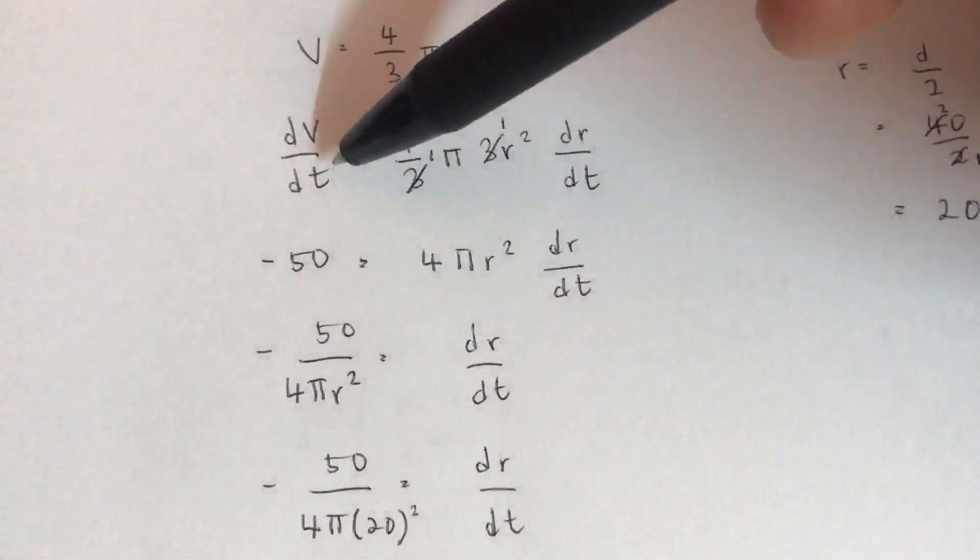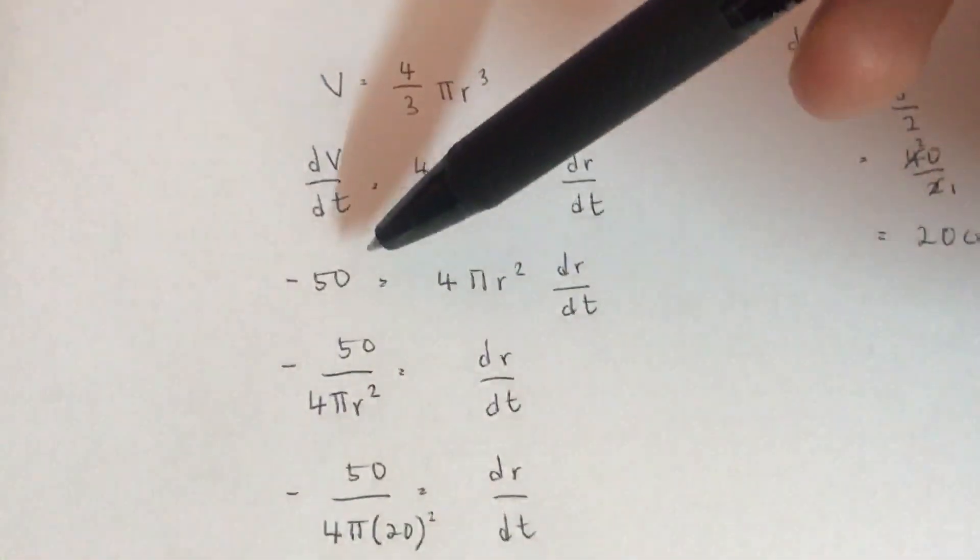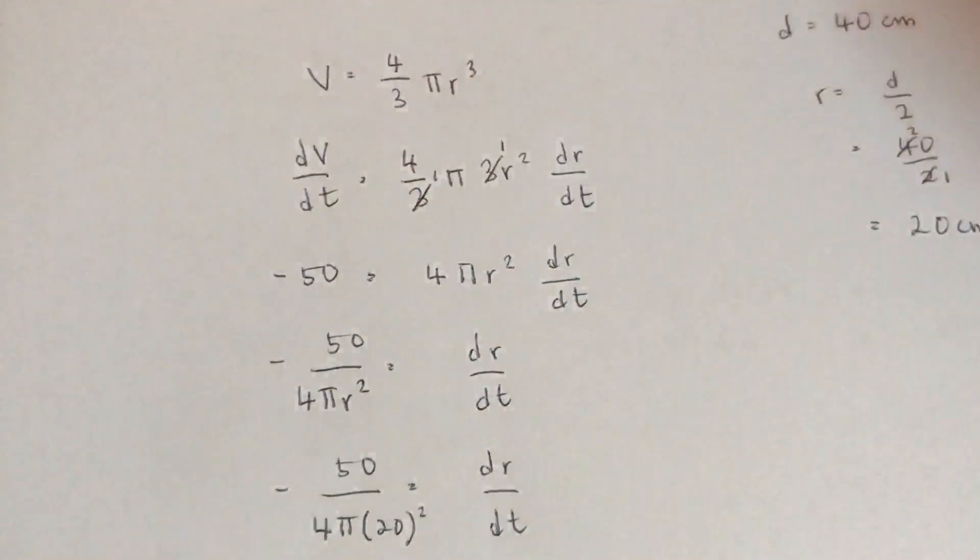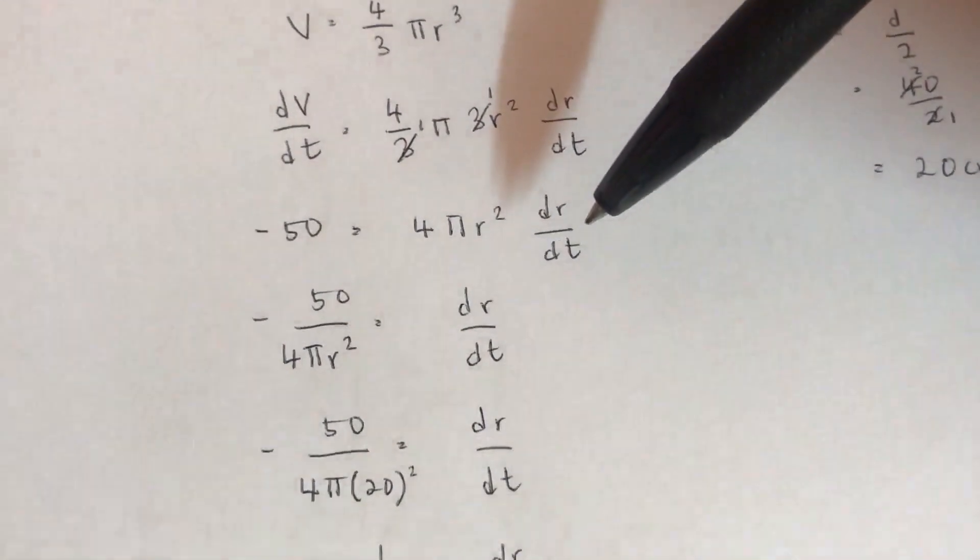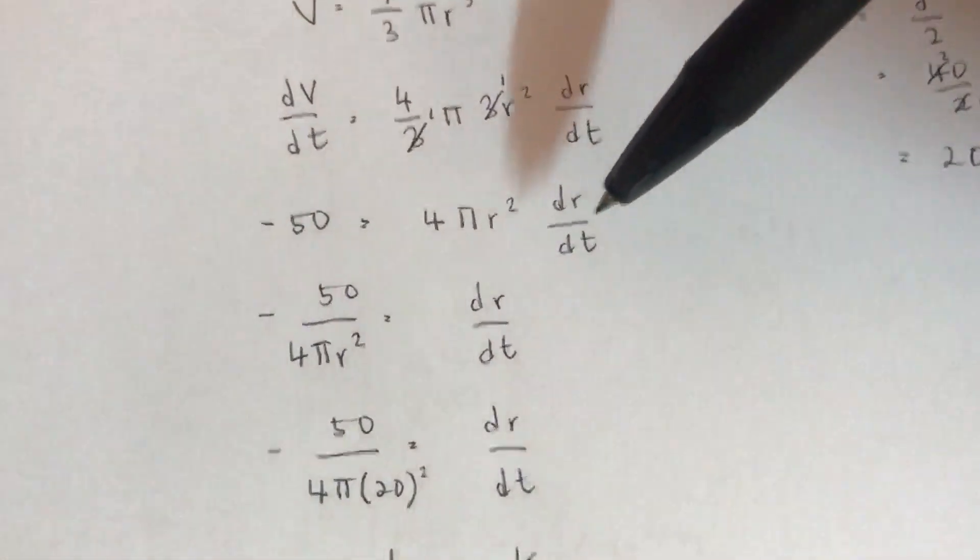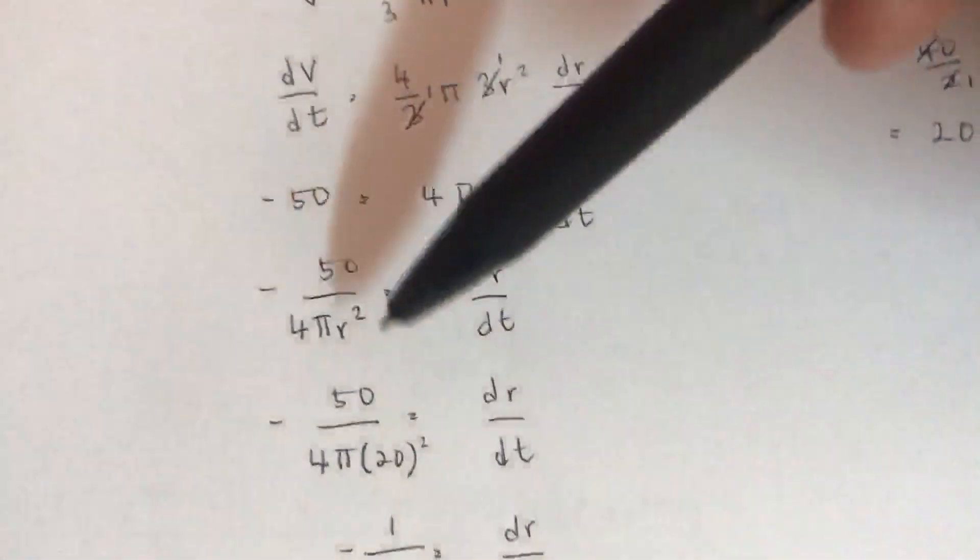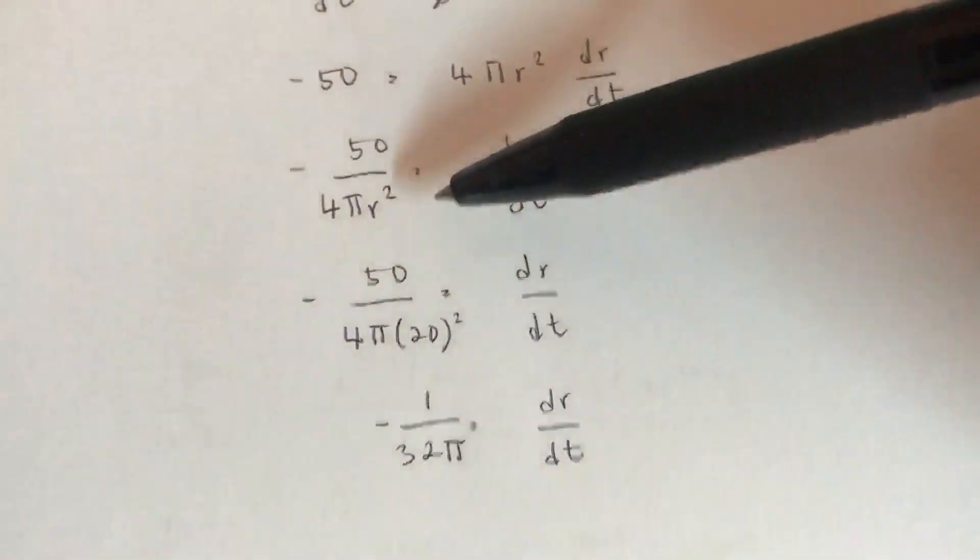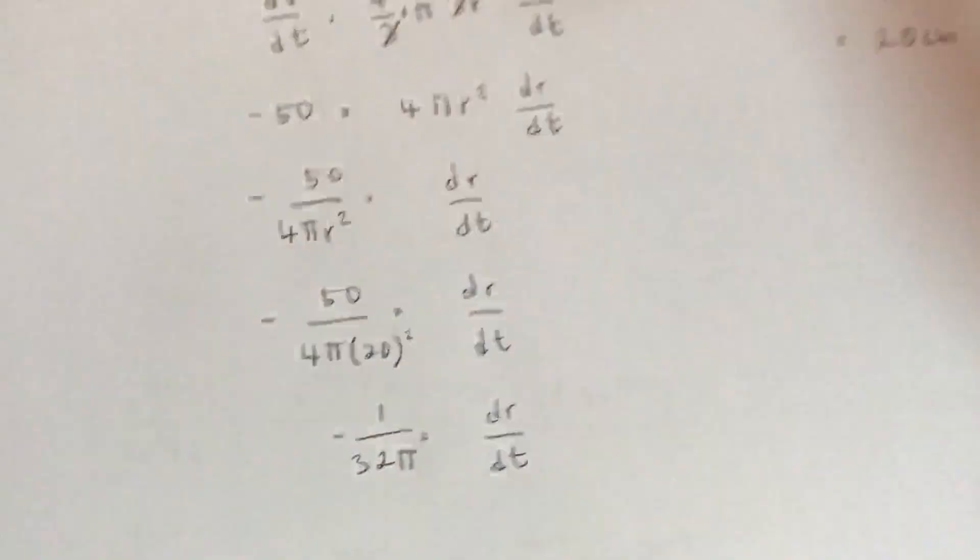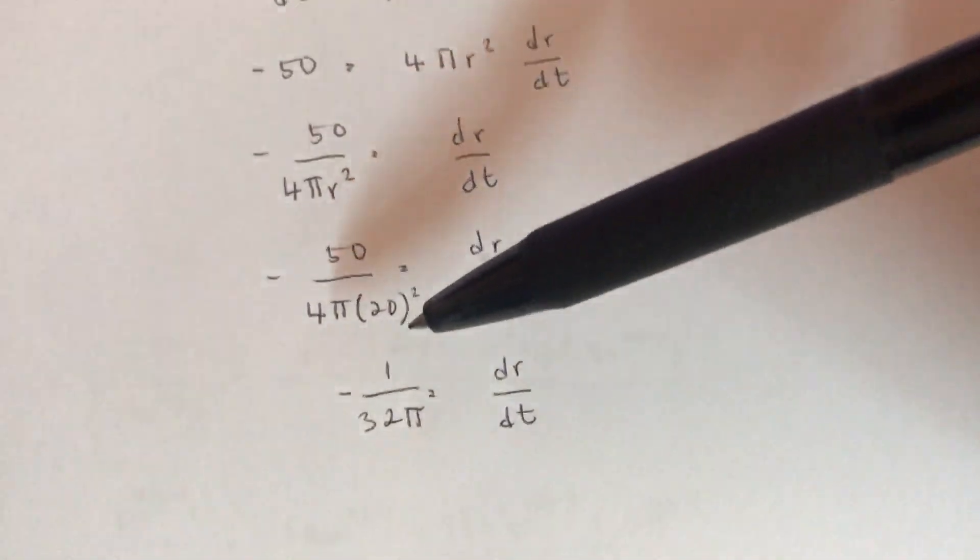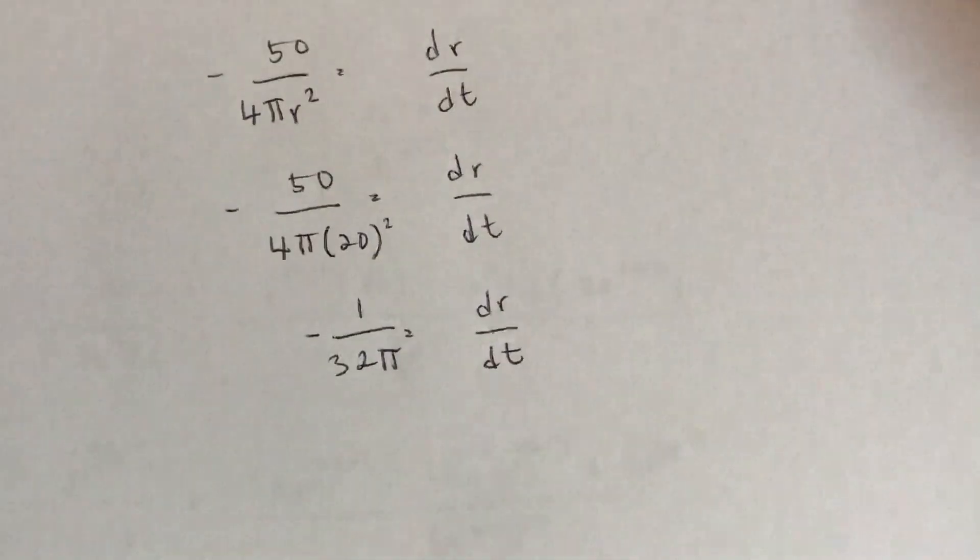So we just have to substitute dV/dt with negative 50. Then negative 50 equals 4 pi r squared dR/dt. Because we need to find dR/dt, we divide both sides with 4 pi r squared. So it will be like this. And all we need is R, which is 20. We substitute it into the formula, and the answer for dR/dt is negative 1 over 32 pi.